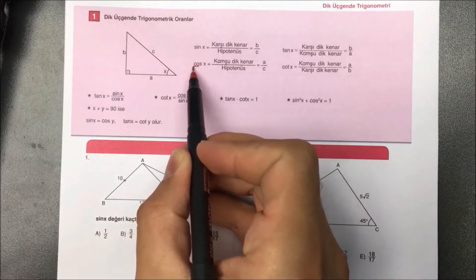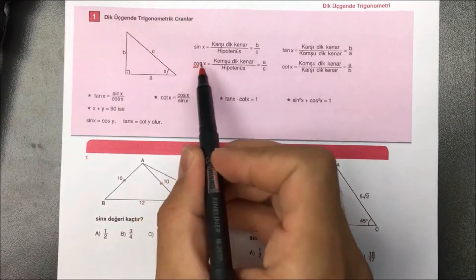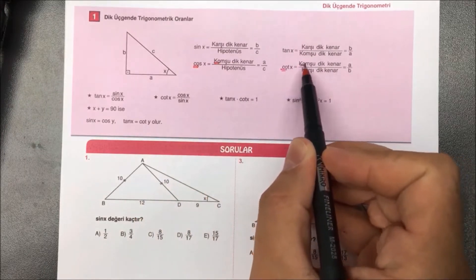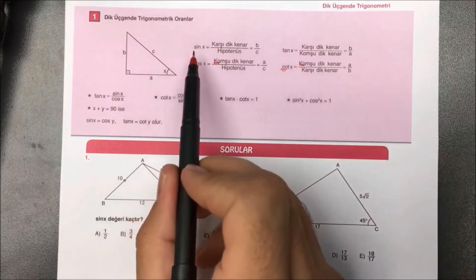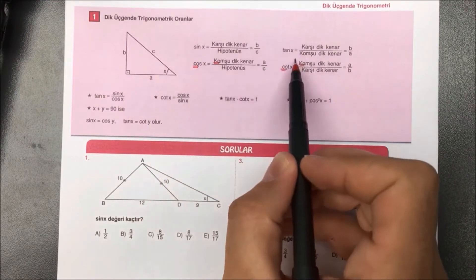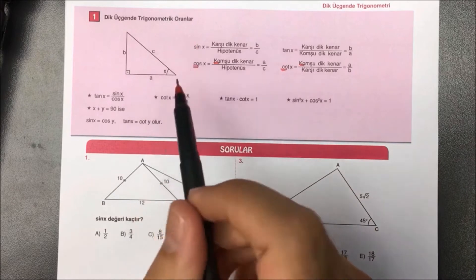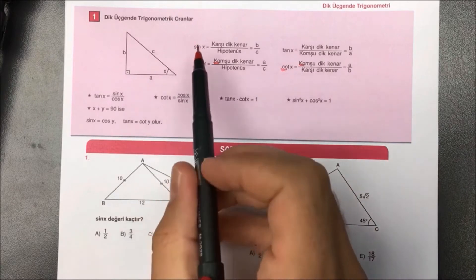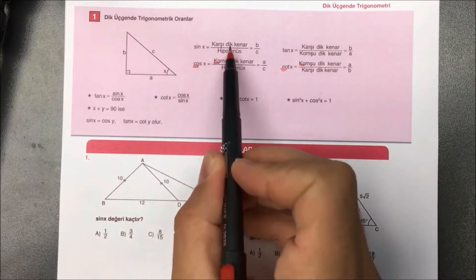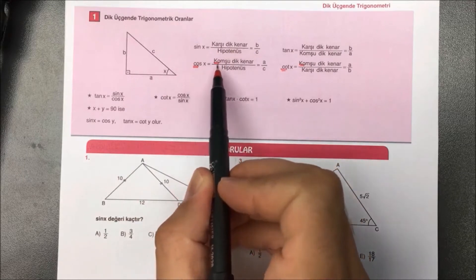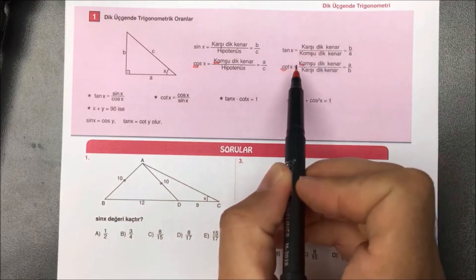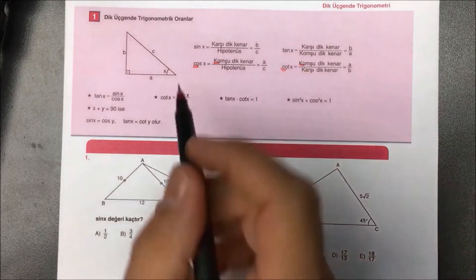Benzer şekilde cos(x)'e bakabiliriz. Kosünüs 'ko' ile başlıyor; oradan aklınıza gelebilir: ko ile başlayanların üst tarafı komşudur. Kotanjant da aynı şekilde ko ile başlar. Sinüs karşı bölü hipotenüs, kosünüs komşu bölü hipotenüs, tanjant karşı bölü komşu, kotanjant komşu bölü karşıdır.